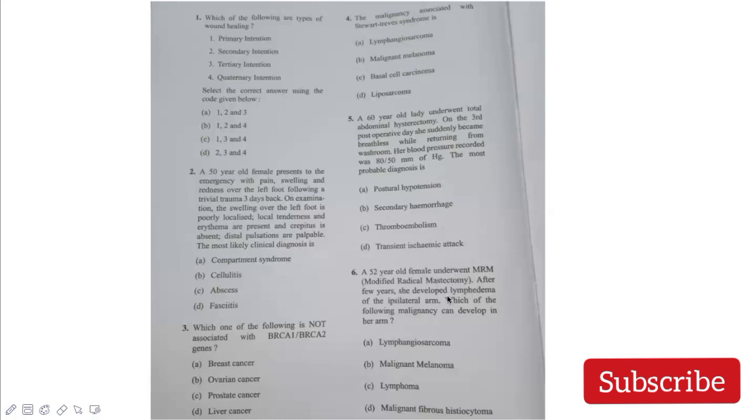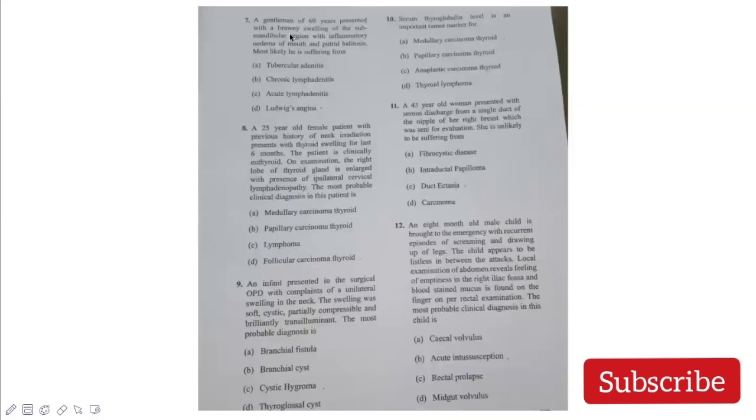A 52-year-old female underwent MRM. After a few years, she developed lymphedema on the ipsilateral arm. Which malignancy can develop? We just discussed this - it's lymphangiosarcoma, also known as Stewart-Treves syndrome. Next question: a 60-year-old gentleman presented with brawny swelling of the submandibular region with inflammatory edema of the mouth and putrid halitosis. Brawny swelling with these findings in the submandibular region classically indicates Ludwig's angina.